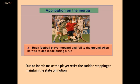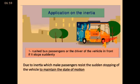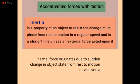We will go back to our definition. What is meant by inertia? Inertia is a property of an object to resist the change of its state from rest to motion at a regular speed in a straight line unless an external force acts upon it. Simplified: inertia force originates due to the sudden change in an object's state from rest to motion or vice versa.